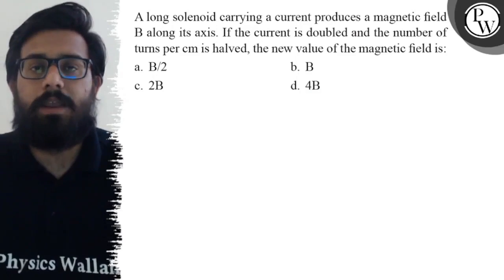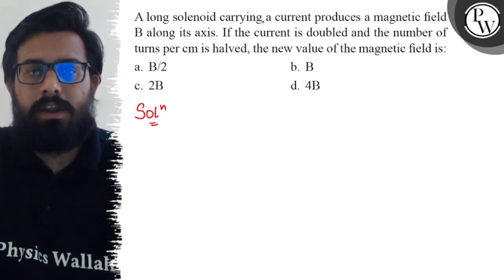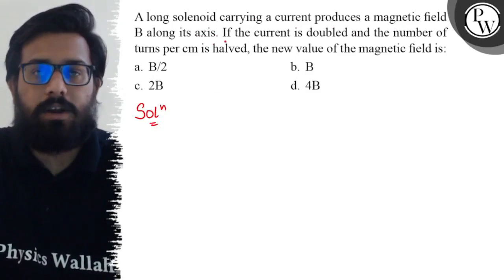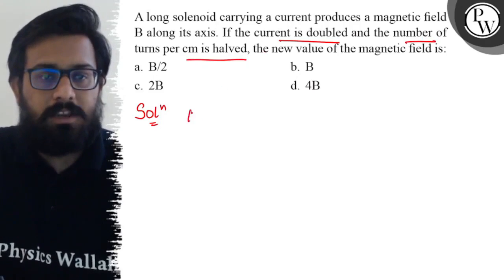So here in this question you have a solenoid carrying a current that produces a magnetic field along its axis. If the current is doubled and the number of turns per centimeter is halved, so initially you have the value as μ₀nI.